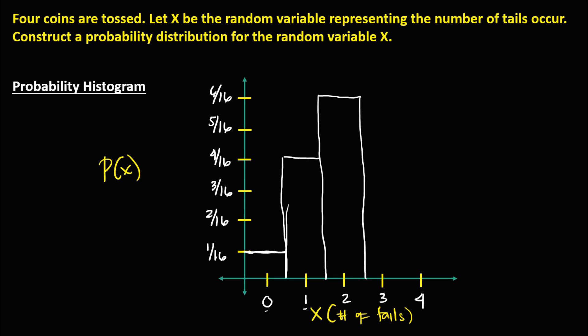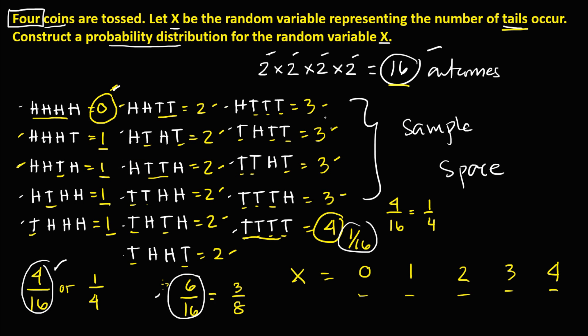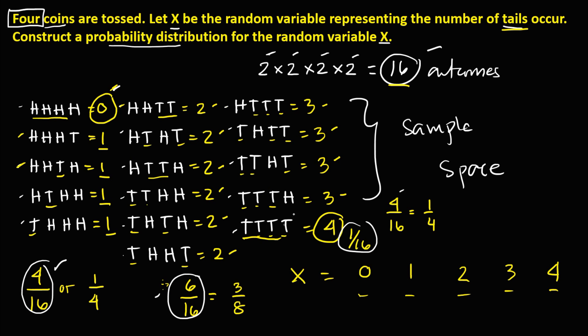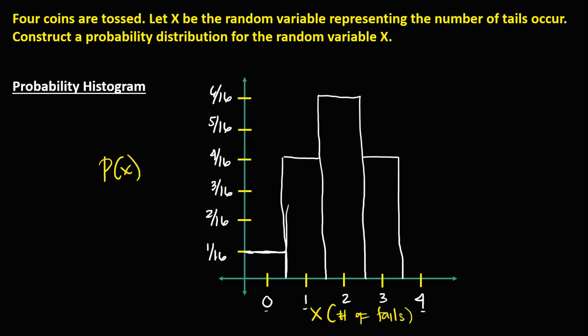For three tails, the probability is 1/4 or 4/16, so in the histogram this is 4/16 for three tails. For four tails, the probability is 1/16. So this is now the probability histogram for this experiment.